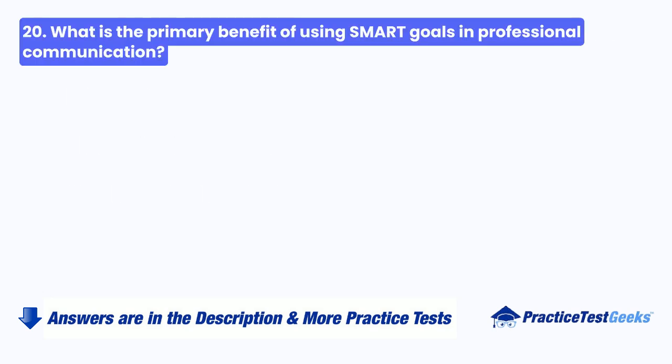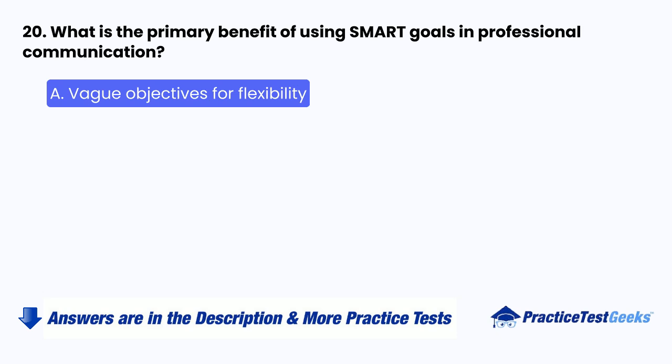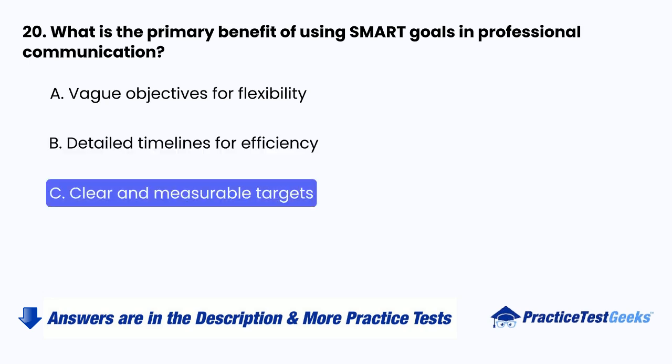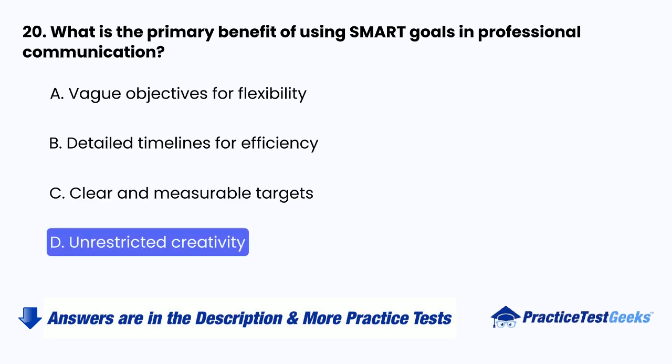Question 20: What is the primary benefit of using SMART goals in professional communication? A. Vague objectives for flexibility. B. Detailed timelines for efficiency. C. Clear and measurable targets. D. Unrestricted creativity.